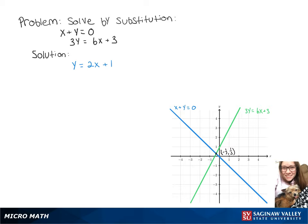Now we can take that y value and sub it into our first equation. So we've got x plus 2x plus 1 equals 0.